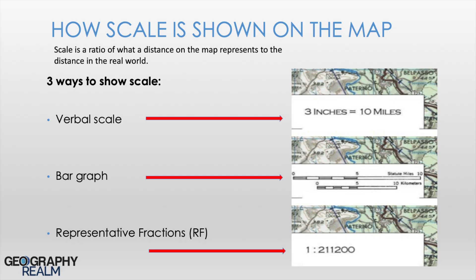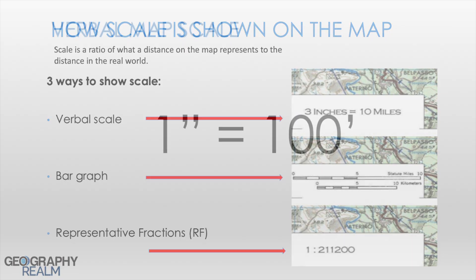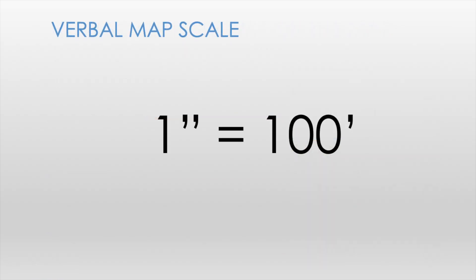Verbal scales use a ratio of one type of unit on the map to indicate the distance that that unit represents on the ground. For example, one inch equals 100 feet. This means that one inch on the map represents 100 feet on the ground.